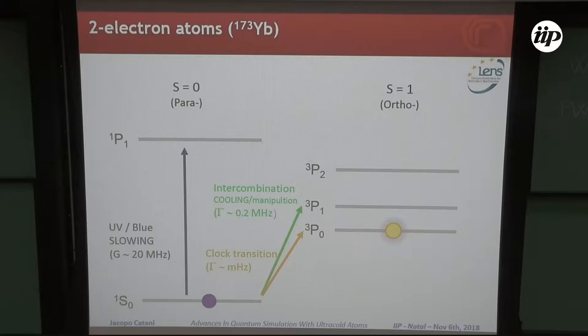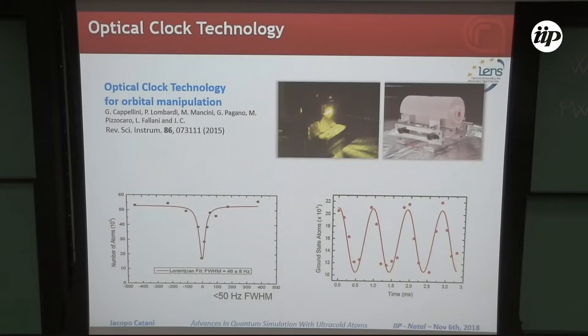You have this clock transition connecting the 1S0 and 3P0 levels, which, provided that you have the right technology in the lab, allows you to use this long-lived metastable state as a sort of additional ground state. In the lab, we have this technology. We have a laser which is able to make linewidths below 100 hertz, and we were able to observe coherent oscillation in the population between the ground state and the orbital state.